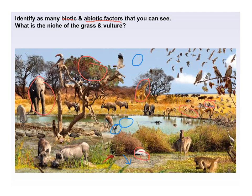Here's a question: what is the niche of the grass? That just means, what does the grass do in its community? Well, this grass gets eaten by herbivores like the wildebeest, the zebras, or the gazelles. It is a producer — the very bottom of the food chain. And what's the niche of a vulture? A vulture eats things that are dead; it's a scavenger. Its role in the community is to help clean up dead organisms — it comes in, eats those dead things, picks the meat away, and helps get rid of the dead animals.